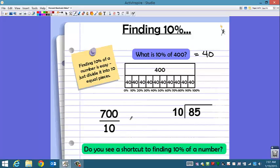Okay, what about 10% of 700? Well, again, divide it by 10. Hopefully, you'll realize that when they both end in a zero, we can do a little shortcut by crossing out one zero from each, and we get 70. So 10% of 700 is 70.